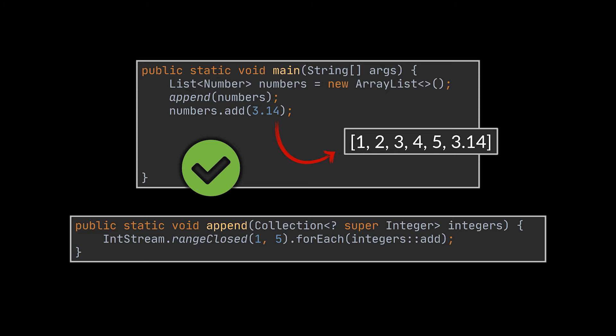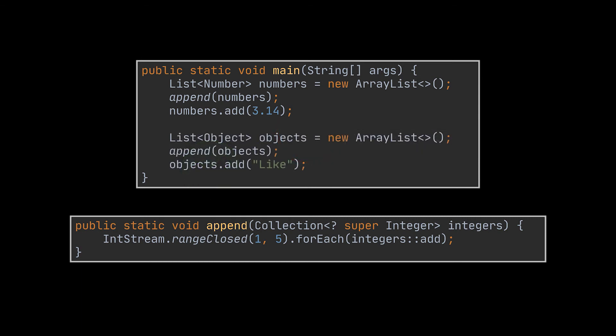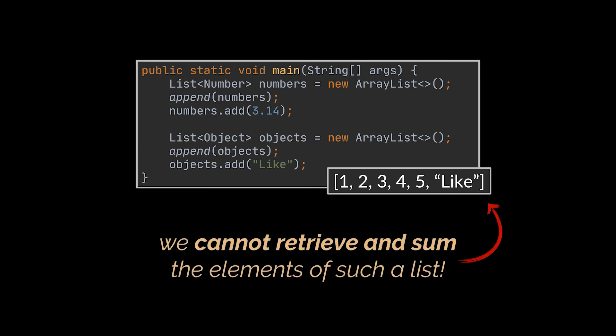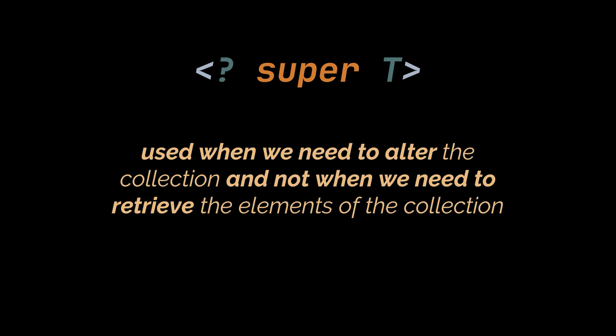With a super wildcard we can also pass a List of Object. However, there is a catch: if we want to retrieve and sum the elements from a collection declared with the super wildcard, we won't be able to do that — the compiler cannot execute a sum operation on a list that could store both integers and strings at the same time. We used super here because we needed to add elements into the collection and weren't trying to retrieve them.